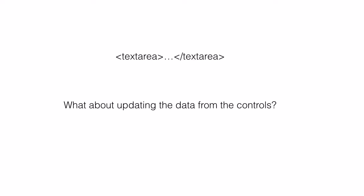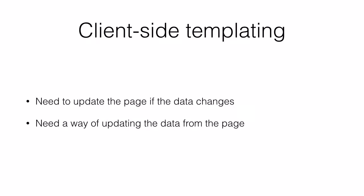What about the other direction? HTML has things like text areas, inputs, and various controls that the user can interact with to change what's on the page. We'd like to update the data in our JavaScript based on what the user is doing with the controls on the page. So these are a couple of extra things we need to deal with when doing templating in the browser: we need to update the page if the data changes, and we need a way of updating the data from the user's interaction with controls.